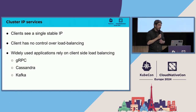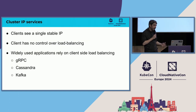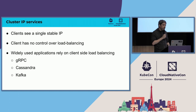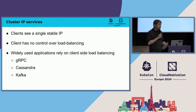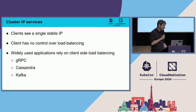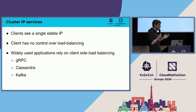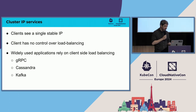As a summary, cluster IP services are magic in many ways, but the problem is clients have no control over load balancing, and widely used applications rely on this. In addition, some applications even rely on being able to see all the backends — this is true for Cassandra or Kafka, for instance.